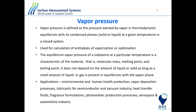Let me first define vapor pressure. The vapor pressure is defined as the pressure exerted by vapor in thermodynamic equilibrium with its condensed phase at a given temperature in a closed system. The sample substance can be either solid or liquid. The value of the vapor pressure is used to calculate the heat of vaporization or the vaporization/sublimation enthalpy. The vapor pressure of a substance at a certain experimental temperature is usually characteristic of the material, defined by properties like molecular mass, melting point, and boiling point.